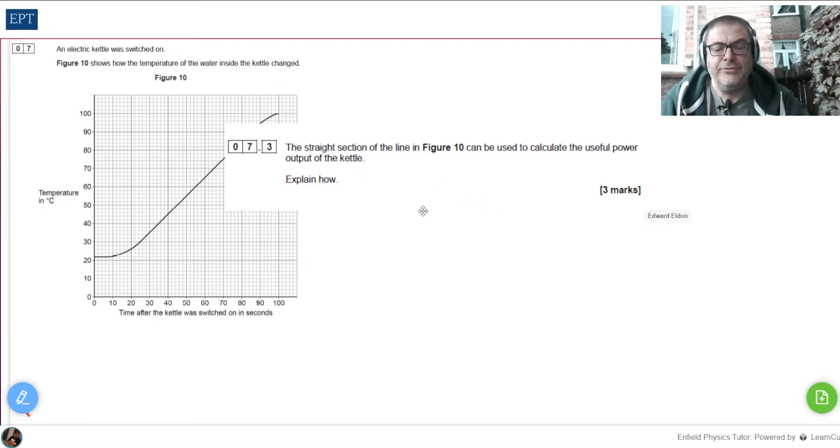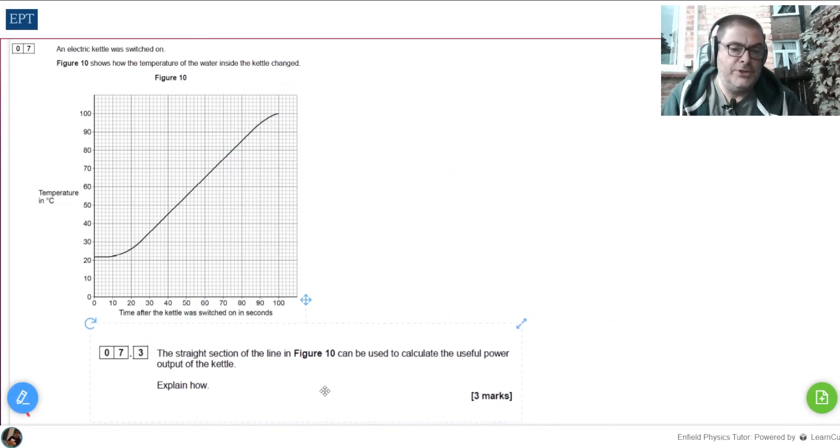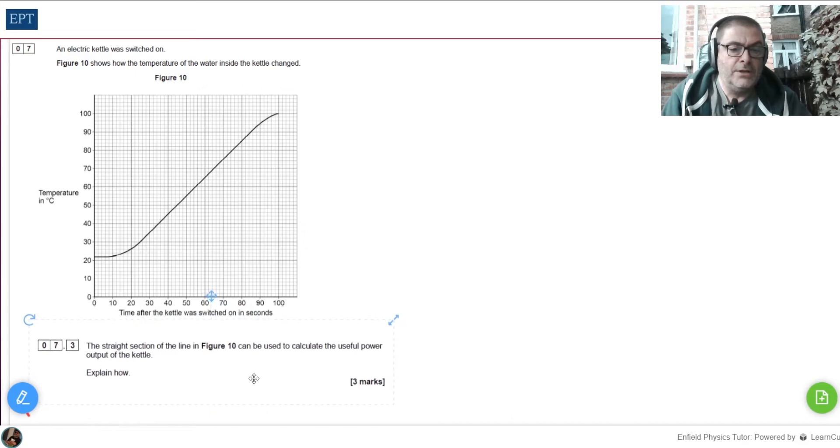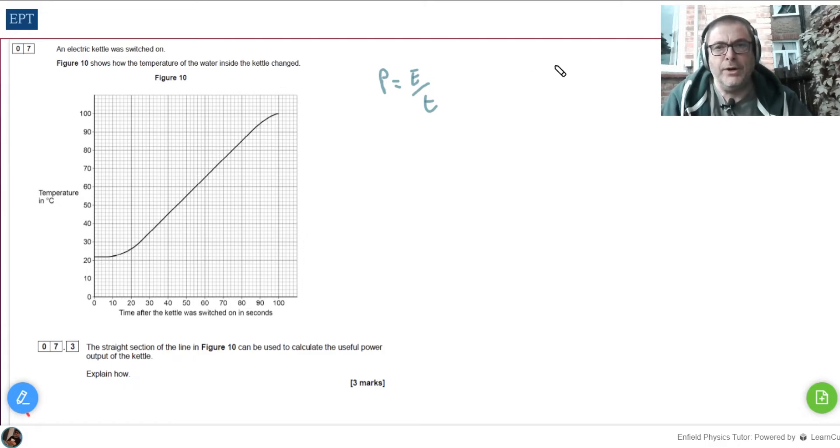Last part, 7.3. This is such a great question, it makes the heart of every physics teacher sing for joy because it's just a little bit beyond the usual stuff. Maybe it's a question that separates your eight from your nine. Either way, once you get into it, it's not as bad as you think. It says the straight line section of figure 10 can be used to calculate the useful power output of the kettle. Okay, so we're talking about the power output here. First of all, let's remember that power equals energy over time.